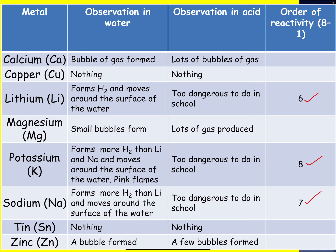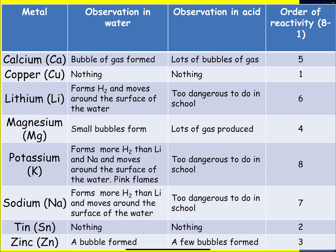When calcium reacts with water, bubbles of gas are formed — that gas is hydrogen. Copper doesn't do anything. Lithium produces hydrogen. Magnesium bubbles, producing hydrogen gas. Potassium, sodium, tin doesn't do anything, zinc bubbles again. Bubbles are a sign of a chemical reaction taking place, as well as temperature change and change in color. Looking at the reactions with acids, lithium is too dangerous to do. From the ordering, copper is the least reactive and potassium is the most reactive.